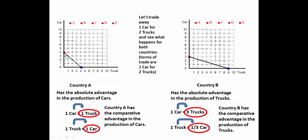If country A trades away one car, it would get two trucks. If it traded away an additional car, it would get two more trucks. Continuing this pattern, if it traded away all of its cars, it would get eight trucks. If I connected these dots, this would be the consumption possibility curve for country A. Country A is better off through this trade.